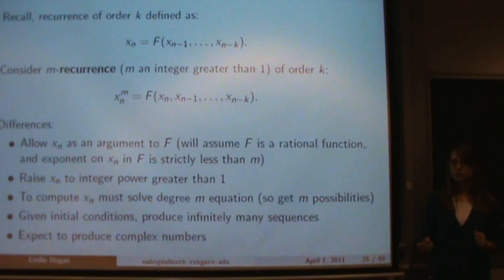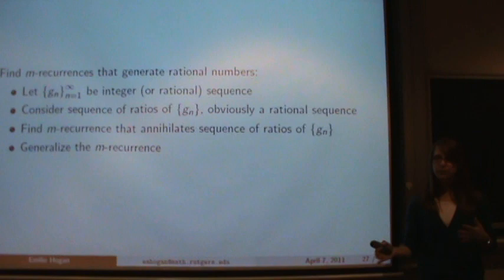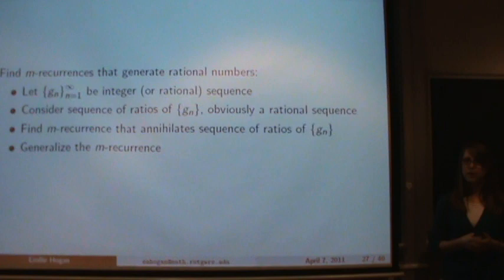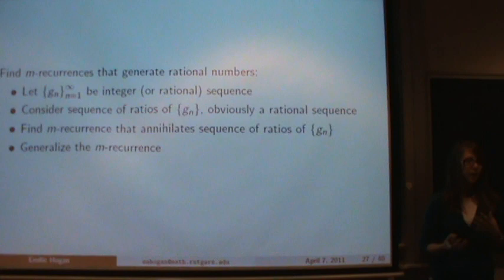We're also expecting to produce complex numbers because we're solving these higher-degree equations. So what I'm interested in is looking for m-recurrences that produce rational numbers when we're expecting them to produce complex numbers. The approach is to first look at a rational sequence and then consider the sequence of ratios. So instead of the sequence g_n, I look at g_{n+1} over g_n, which is obviously rational. Then I want to find an m-recurrence that annihilates this sequence of ratios, and generalize to find m-recurrences that produce rationals without being prescribed to do so.